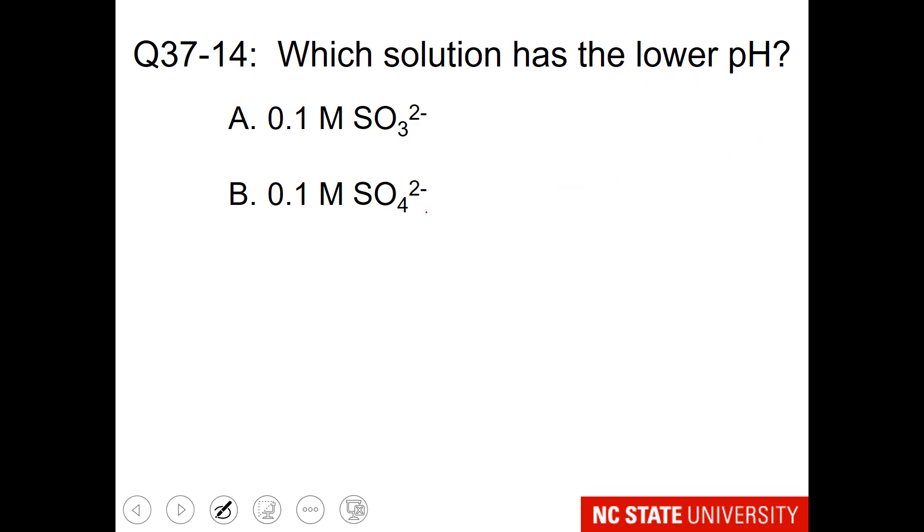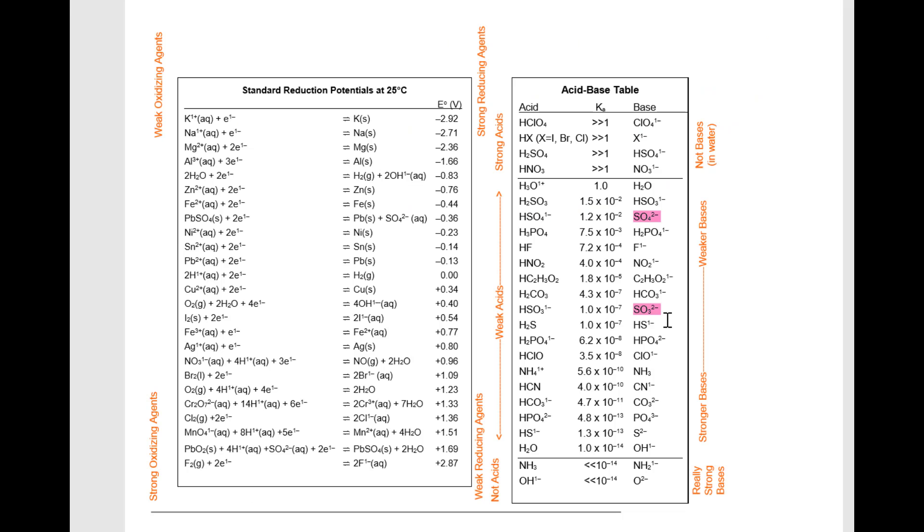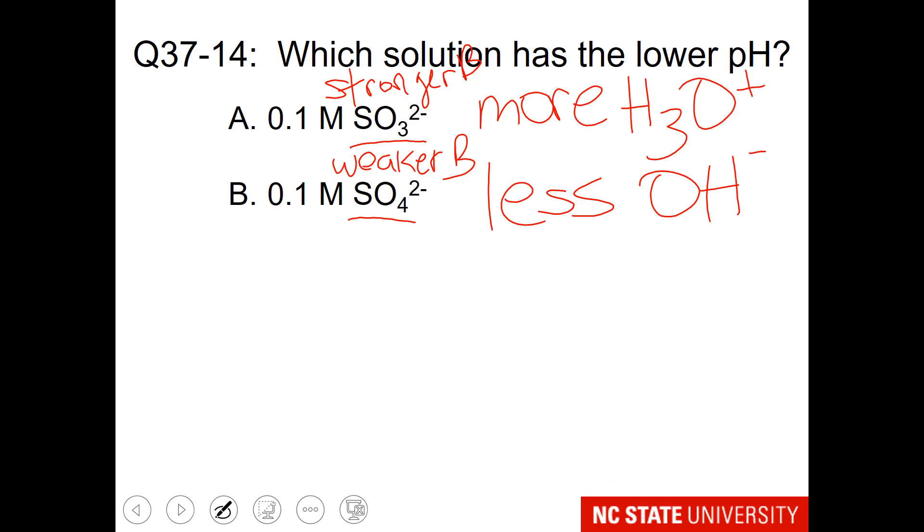Here is another question regarding lower pH. The solution with the lower pH will have more hydronium or less hydroxide, and we should think about hydroxide since we are dealing with bases. Let's look up where sulfate and sulfite are on the acid base table. We can see that sulfite is a stronger base than sulfate. So if you want less hydroxide, do you want the stronger base or the weaker base?